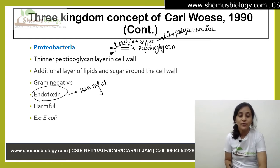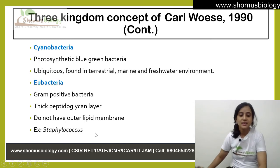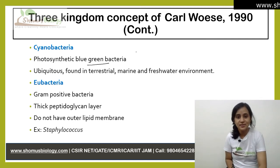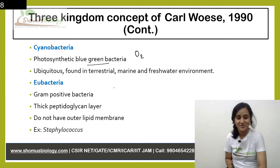An example of Proteobacteria is E. coli. Cyanobacteria are photosynthetic blue-green bacteria that produce oxygen gas. These bacteria obtain their energy through photosynthesis. They are ubiquitous, found in terrestrial, marine, and freshwater environments. Eukaryotic chloroplasts are thought to be derived from cyanobacteria.